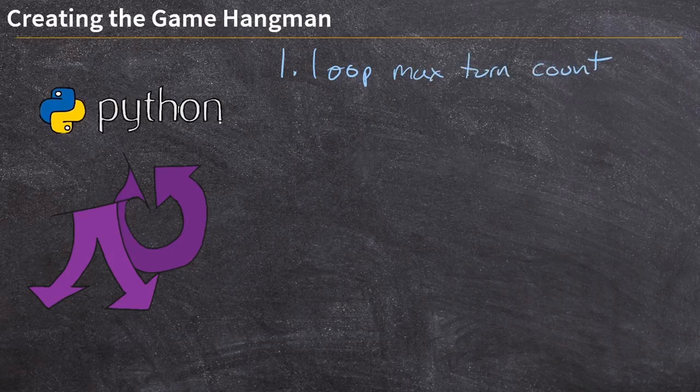I think it's six, right? Two arms, two legs, a head, and a torso. So we need to at most loop through our game six times. You get six chances to get it right. As long as you're getting it right you continue to get chances, but once you've gotten six wrong answers, we need to break out of the game.